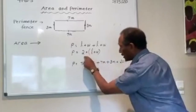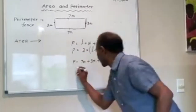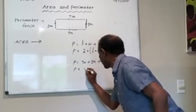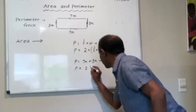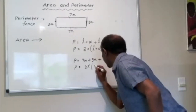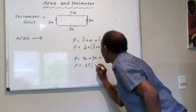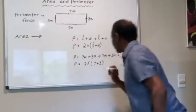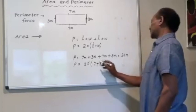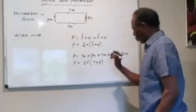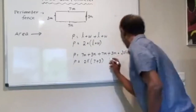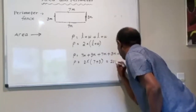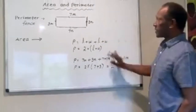If you are using the second formula, you could write perimeter equals two times the quantity: length is seven plus width is three, which is ten. Two times ten is 20. 20 what? 20 meters. This is perimeter.